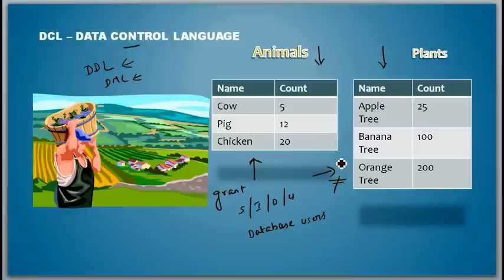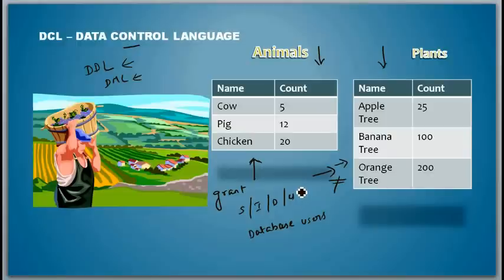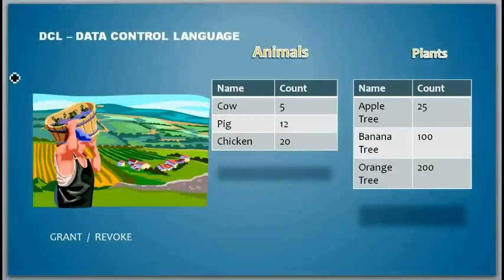Thereby we control their access to the data. If we don't want someone to see this table, then we don't grant access on this table to them — it's as simple as that. So there are some commands which we use to grant access to the objects, and those commands form data control language. Mostly those commands would start with grant and revoke.